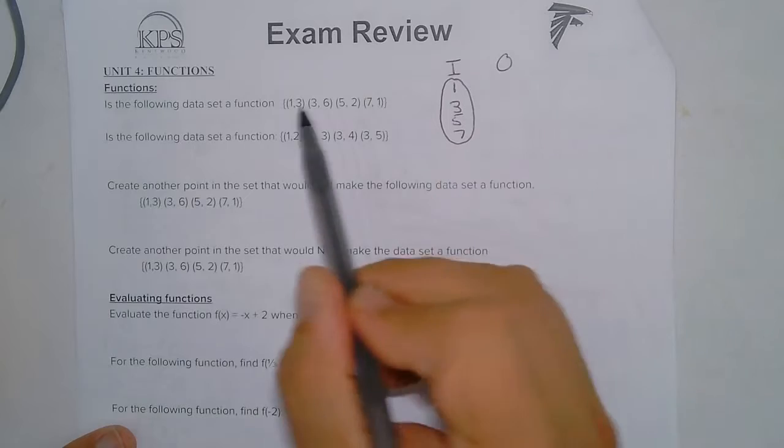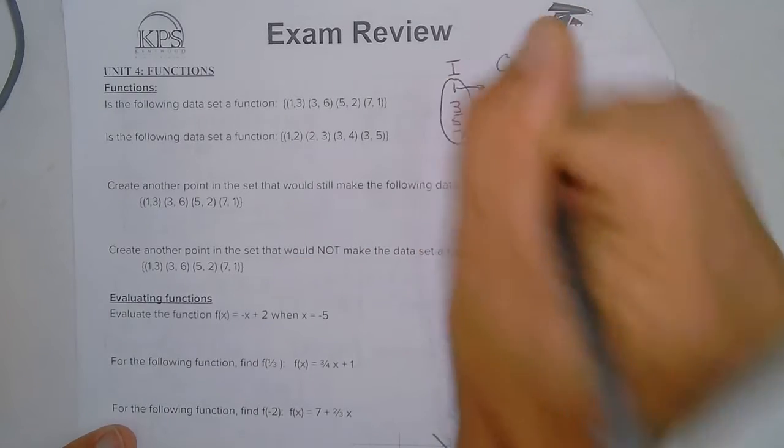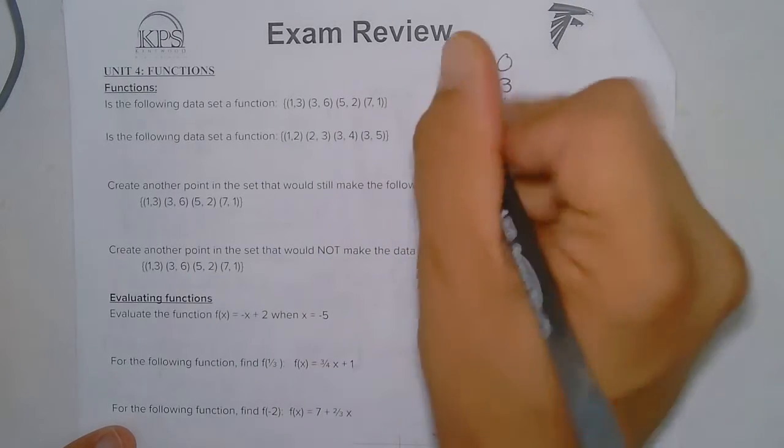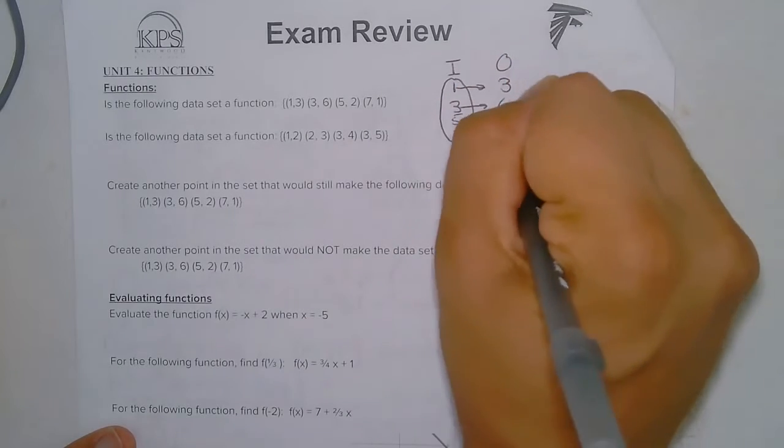Then here are outputs. Now 1 outputs to 3. I'm going to draw an arrow. 3 outputs to 6, 5 outputs to 2, and 7 outputs to 1.